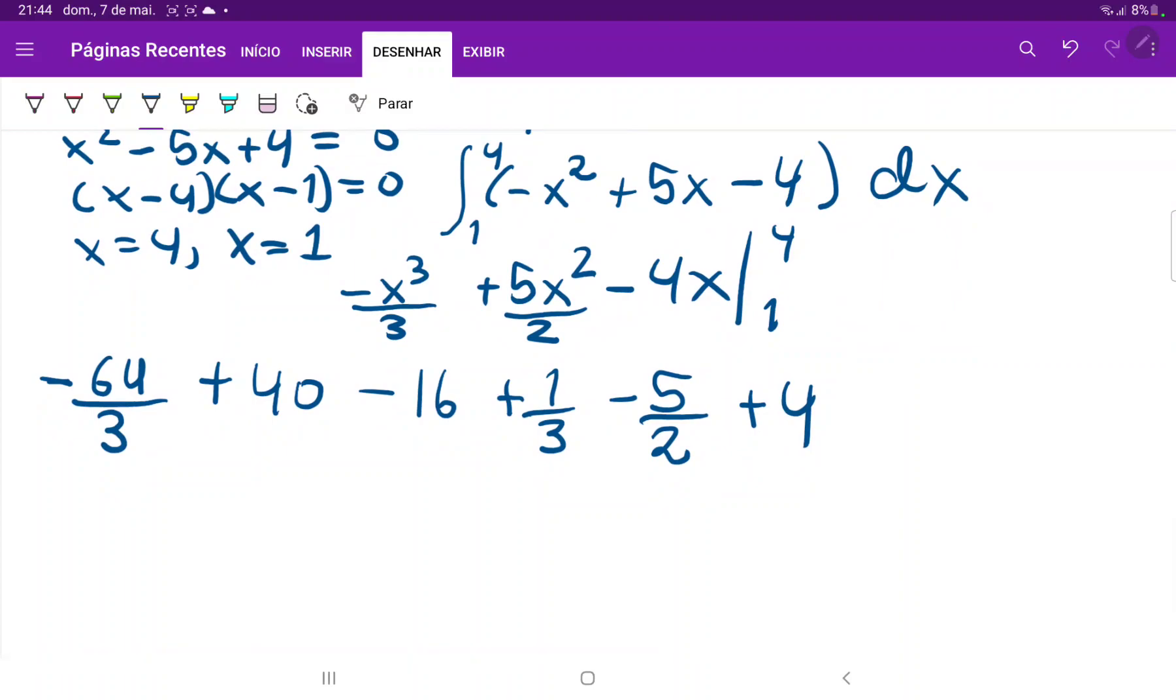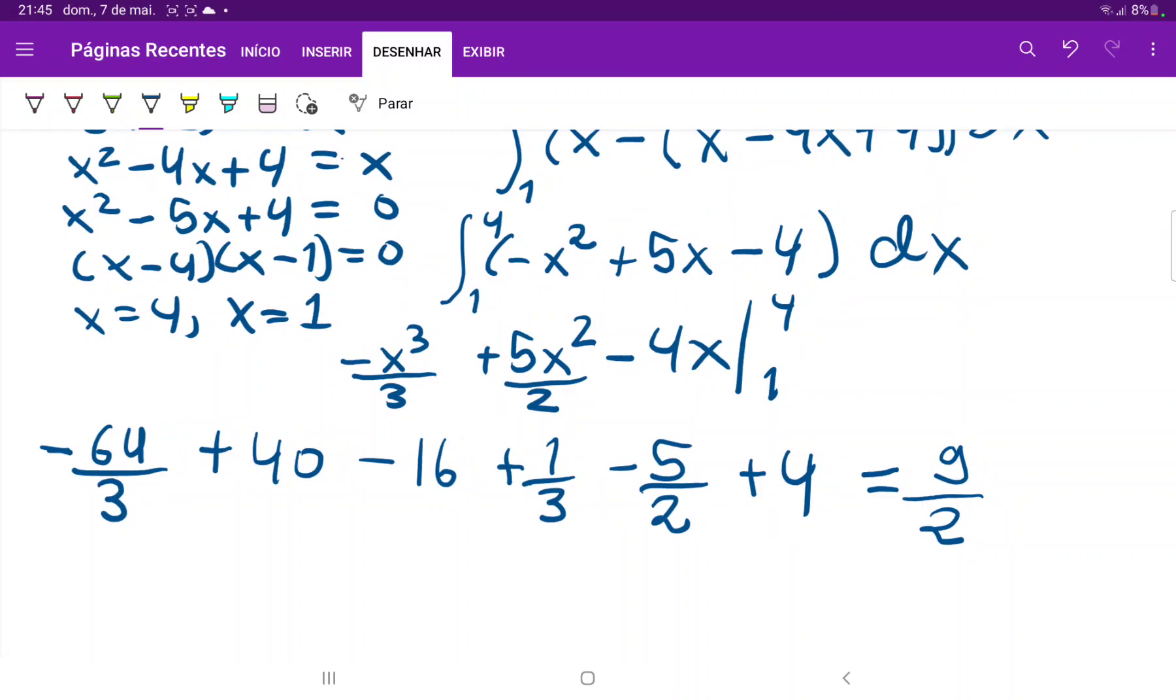So when we put all of this together, let's put it in our calculator: minus 64 over 3 plus 1 over 3 plus 40 minus 16 plus 4. That gives us 7, which says that my math is somehow wrong. Let me see how I messed it up. Let me just double check: minus 64 over 3 plus 40 minus 16 plus 1 over 3 minus 5 over 2 plus 4. Oh yeah, so I just plugged it into my calculator wrong. So this is equal to 9 over 2. Yeah, we do calculus and we forget how to do basic arithmetic, it happens.